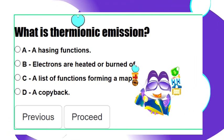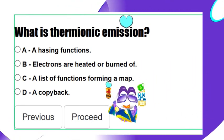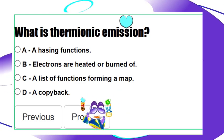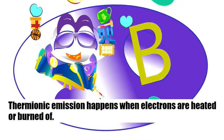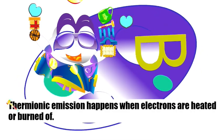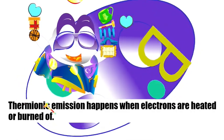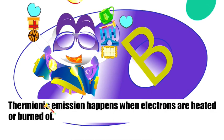What is thermionic emission? Thermionic emission happens when electrons are heated or burnt off. Recall, vacuum tubes have no oxygen — that's where it gets its title from, vacuum. All the oxygen has been sucked out.